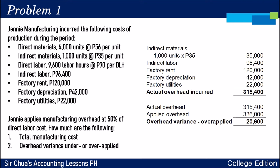That's normal costing — we use a predetermined rate to compute the overhead applied to production. But at the end of the period, you should check the overhead variance, because it will affect our cost of goods sold later in our discussion.